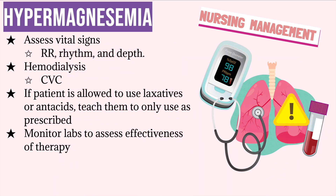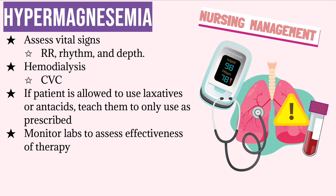The nurse should measure the patient's vital signs frequently and notify the healthcare provider if there are any changes, especially in respiratory rate, rhythm, and depth, as this could signal possible respiratory failure. If your patient is prescribed emergency dialysis, you may be instructed to insert a central venous catheter. If your patient has hypermagnesemia due to excessive antacid or laxative use, teach them to only use these as prescribed. Monitor your patient's labs to assess if therapy has been effective.